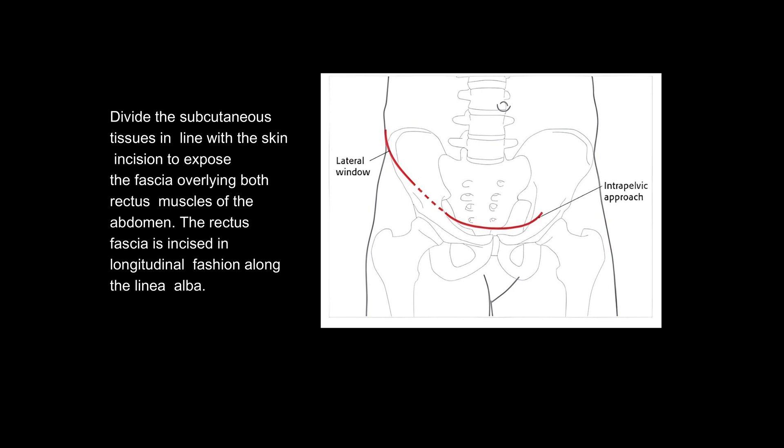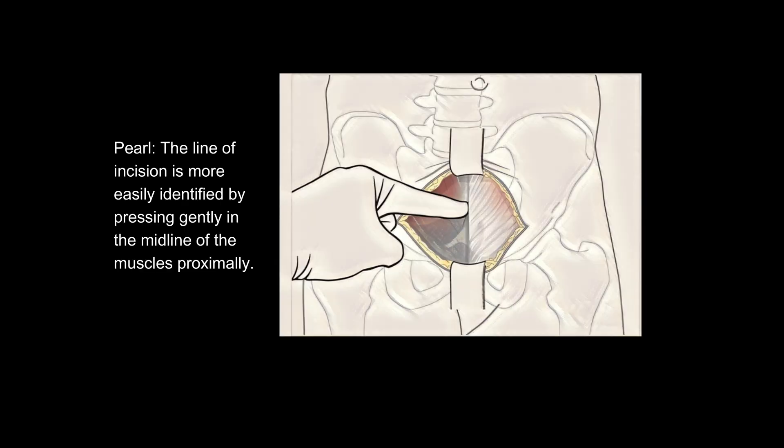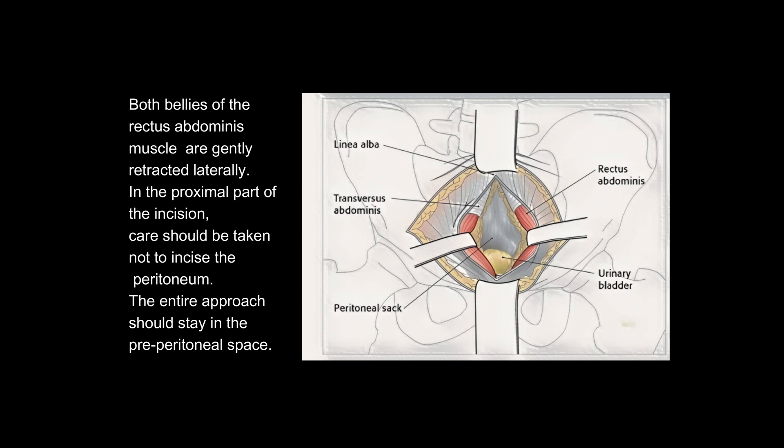Divide the subcutaneous tissues in line with the skin incision to expose the fascia overlying both rectus muscles of the abdomen. The rectus fascia is incised in longitudinal fashion along the linea alba. The line of incision is more easily identified by pressing gently in the midline of the muscles proximally. Both bellies of the rectus abdominis muscle are gently retracted laterally. In the proximal part of the incision, care should be taken not to incise the peritoneum.